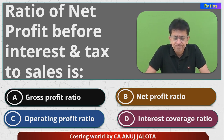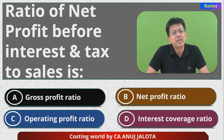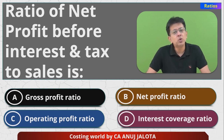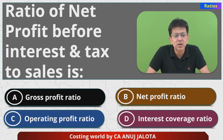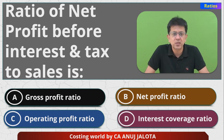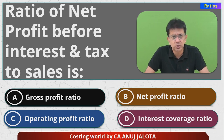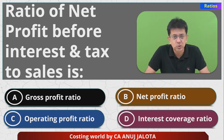Gross profit ratio cannot be the answer — that is gross profit upon sales into 100. Net profit ratio usually means final profit, which should be PAT only — PAT upon sales into 100. So options A and B cannot be the answer.